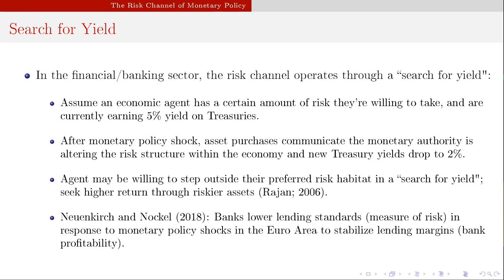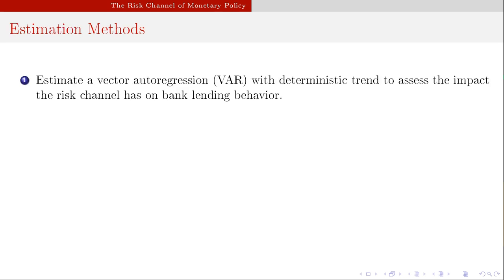There's a preferred yield area and also a preferred risk habitat — a risk-reward trade-off. If yields fall enough, depending on how much and to what level, agents may step outside their preferred risk habitat and take on more risk so long as they're compensated with the yield they want. New and Kirk and Nokel find that large banks lower their lending standards — treated as a measure of risk — in response to monetary policy shocks in the euro area to stabilize lending margins, but they're not successful in doing so.